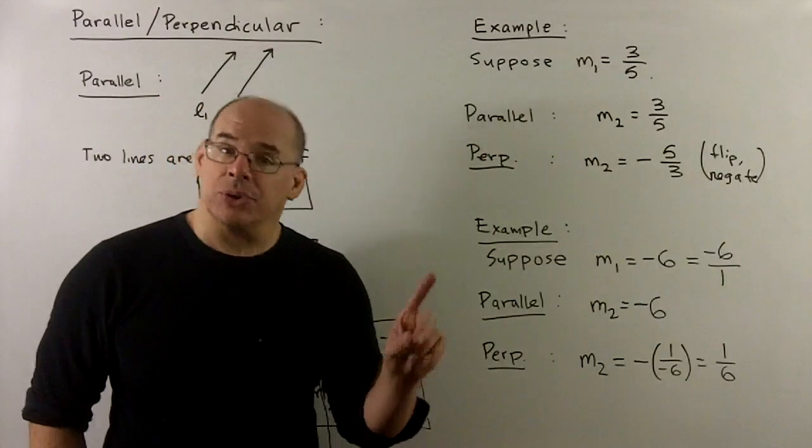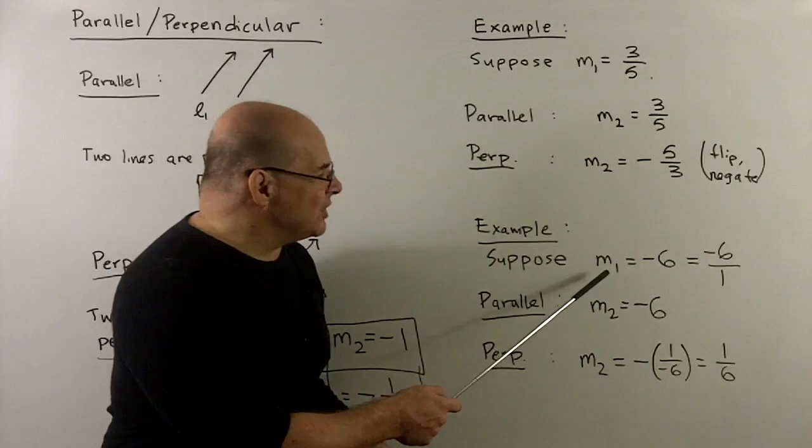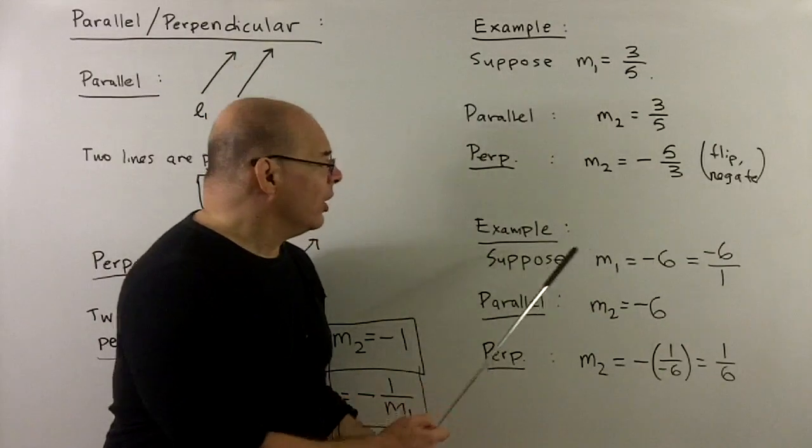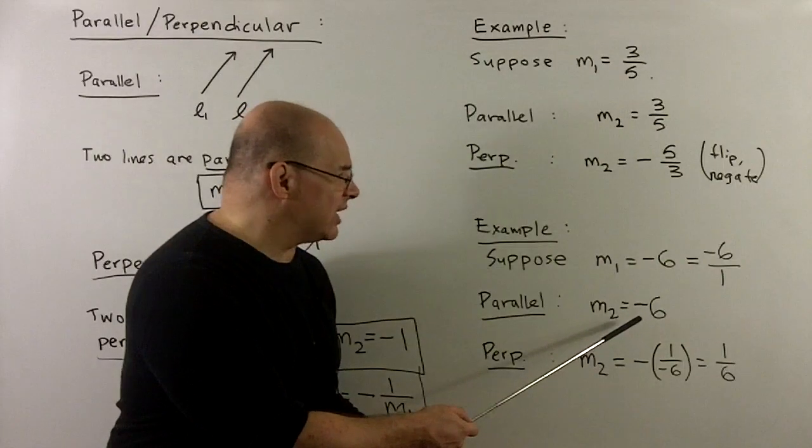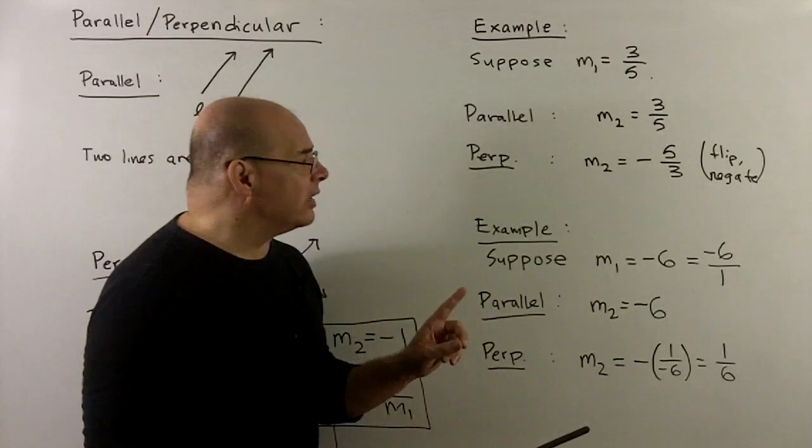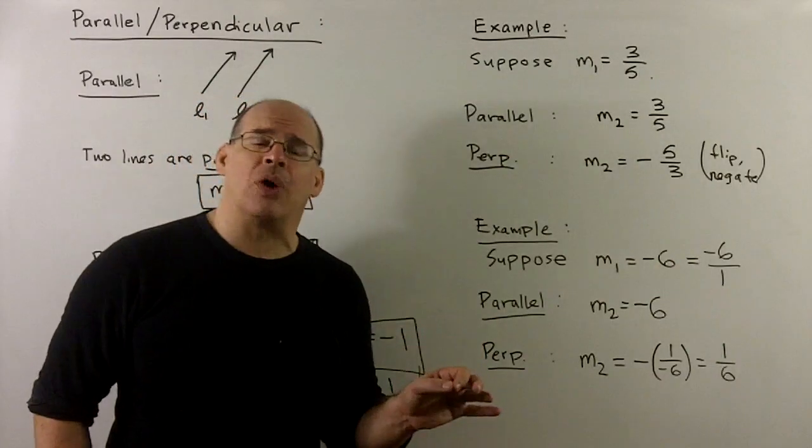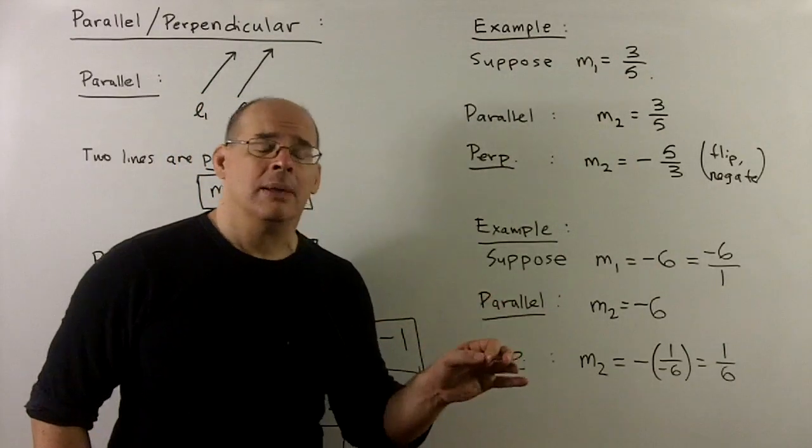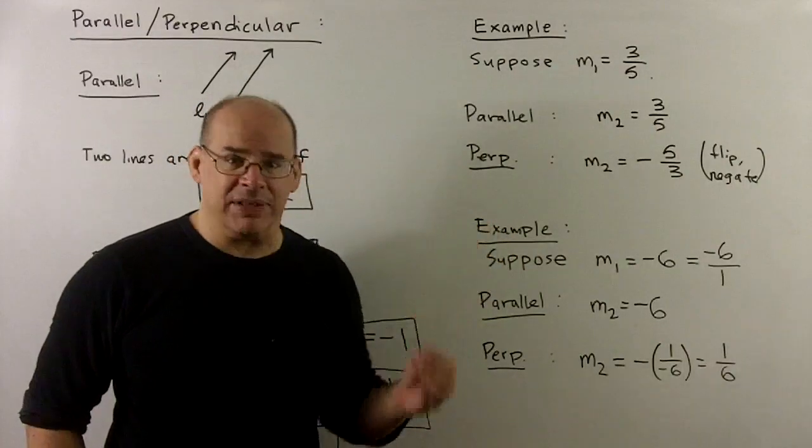For another example, so here, not a fraction, suppose the slope of one of our lines is equal to minus 6. For the parallel, we just repeat, the new slope will be minus 6. For the perpendicular, we'll note this is not a fraction, but not a problem. I can make it into a fraction by just putting it over 1, because if I put 1 under any number, we have the same number.